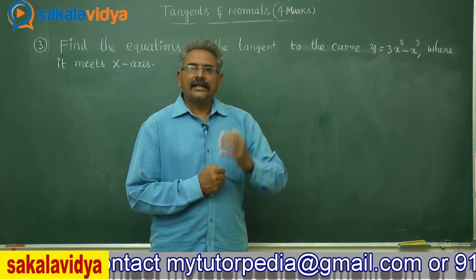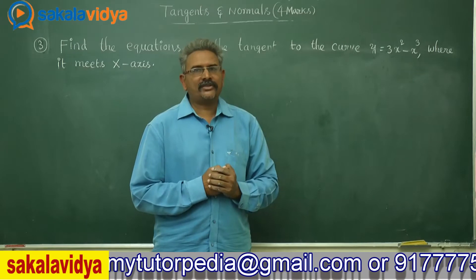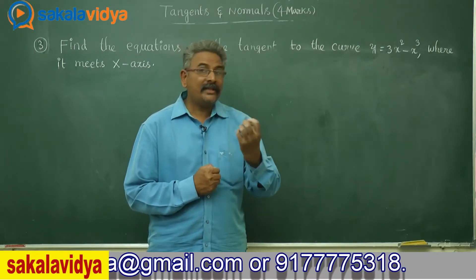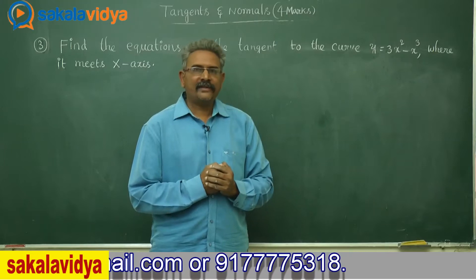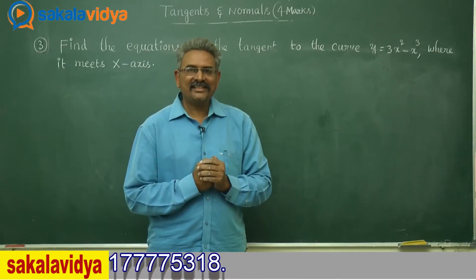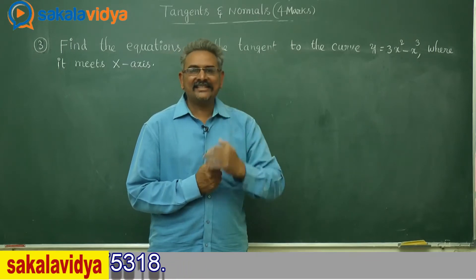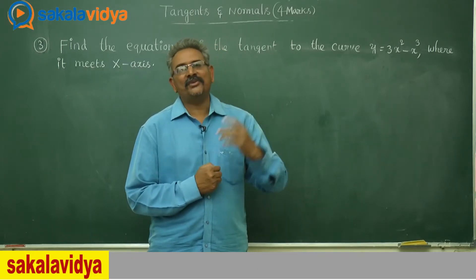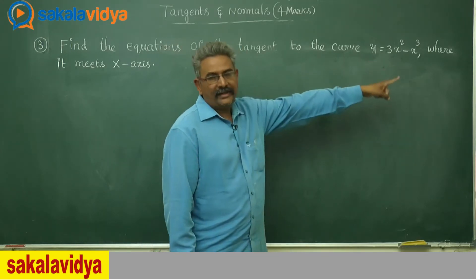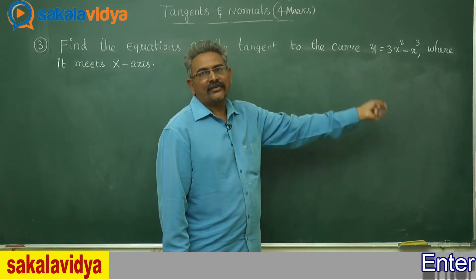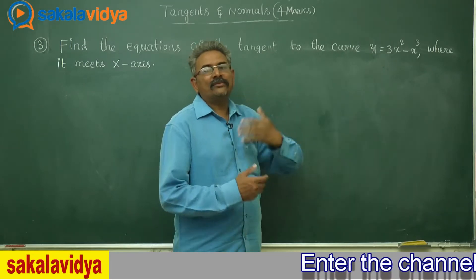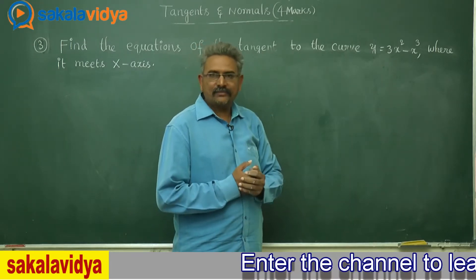First, let us find the point of intersection of the curve with the x-axis. On the x-axis, the y-coordinate is 0. So we put y equal to 0 and find the x values. After getting the x values, we substitute back into the curve to get the y-coordinates. Let us proceed in that path.